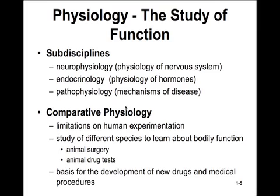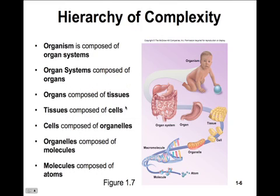We'll move now into the section on human structure and look at the hierarchy of complexity. A whole organism is a component of many organ systems. Each organ system is composed of organs, and each organ is composed of tissues. Tissues are composed of cells, and cells are composed of various organelles, like mitochondria and endoplasmic reticulum. Those organelles are composed of molecules — like the macromolecules of DNA inside the nucleus.